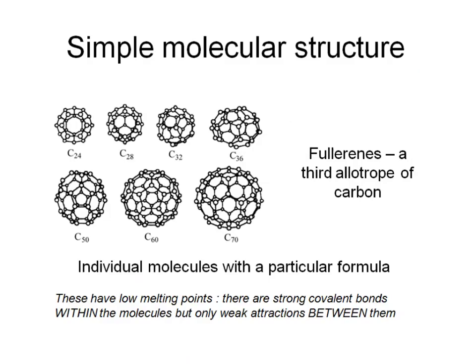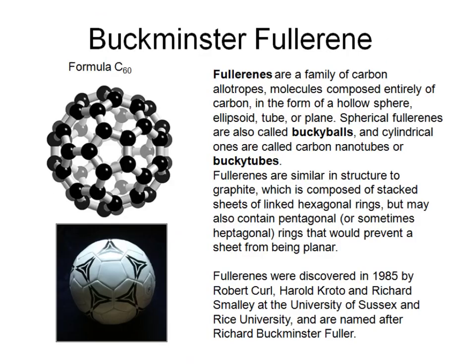Now we've looked at giant molecular structures. Here are some examples of simple molecular structures - these are fullerenes. Fullerenes are balls of carbon atoms arranged in this fashion, and are individual molecules with a particular formula. Although the bonds within those balls are very strong, there are only very weak attractions between one ball and its neighbours, so they tend to have very low melting points. An example is Buckminster fullerene, which has 60 carbon atoms in the ball - an identical structure to a football - and these are used in drug delivery systems among other uses.